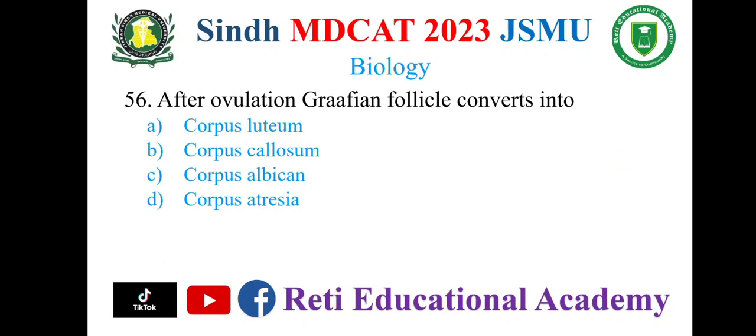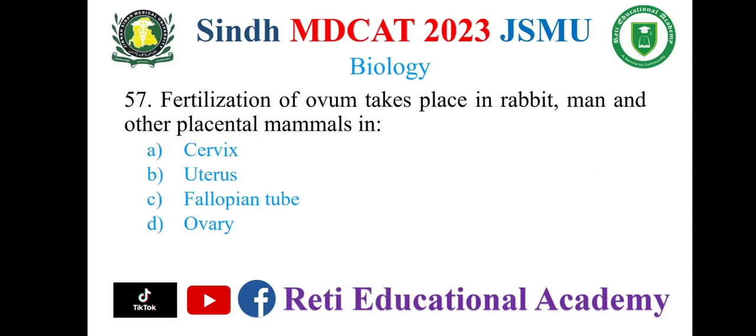Question 56: After ovulation, the Graafian follicle converts into — A. Corpus luteum, B. Corpus choleosum, C. Corpus albicans, D. Corpus atraceae. The correct option is A: Corpus luteum.